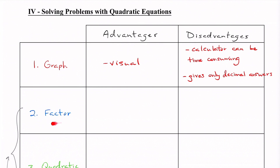The second way is factoring. Now factoring, most of the time, once we've gotten good at it, the advantage is that it's quite fast. The disadvantage of factoring is that you might not always be able to factor. So factoring is a good one because you can solve a question really quickly, but if you can't actually factor it then it's not going to be very useful to you.